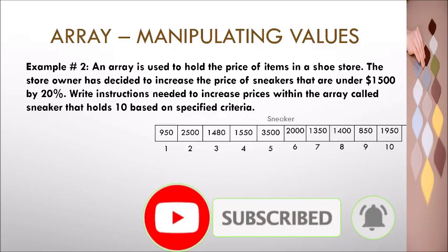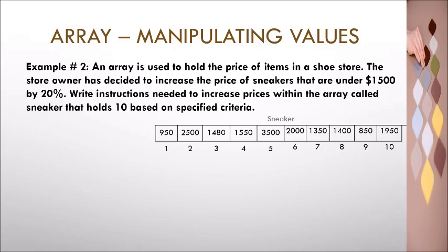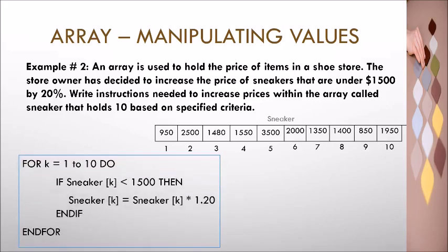Consider that the values displayed are the current prices of different types of sneakers found within the shoe store. The array shows details for ten sneakers. The solution shows a for loop header containing the counter variable k and the total number of times the loop will be executed. A selection statement is then used to evaluate whether the value found at the current index is less than fifteen hundred.